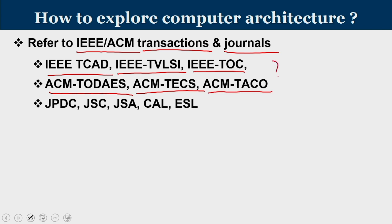These are some of the top-tier journals where you get access to research articles published in the architecture domain. Other useful publications include the Journal of Parallel and Distributed Computing, Journal of Supercomputing, Journal of Systems Architecture, Computer Architecture Letters, and Embedded System Letters — all of which contain very good research articles.